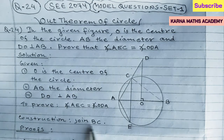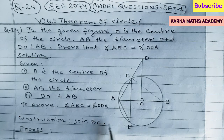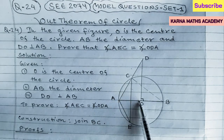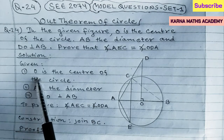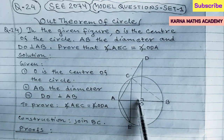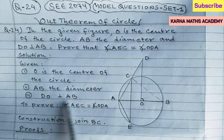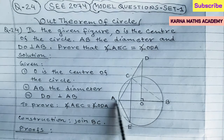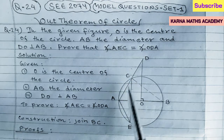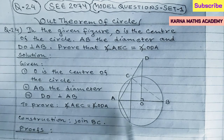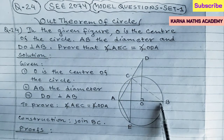I have already set this up so that we can save time. In order to prove angle AEC is equal to angle ODA, we are given that O is the center of the circle, AB is the diameter, DO is perpendicular to AB, and we have to prove angle AEC is equal to angle ODA. We need one construction: join BC, which I have shown by a dotted line.